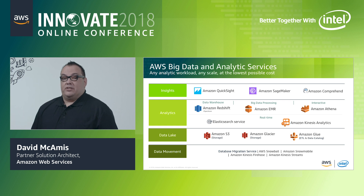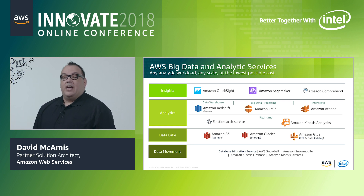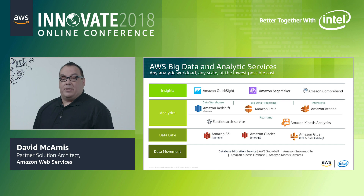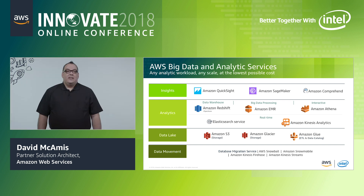The first place we're going to start is with a look at the AWS Big Data and Analytics Services. Amazon Web Services provides a broad range of services to help partners build and deploy big data and analytics applications quickly and easily. AWS gives you fast access to flexible and low-cost IT resources so you can rapidly scale virtually any big data application.